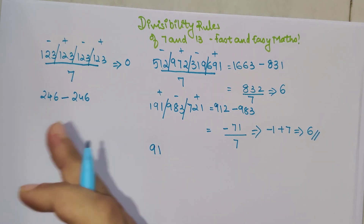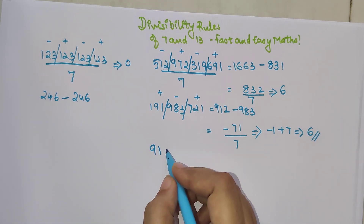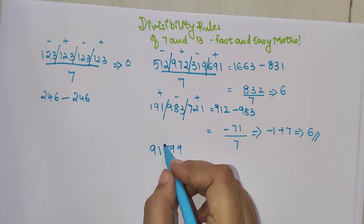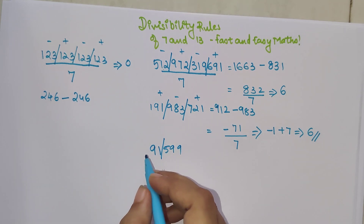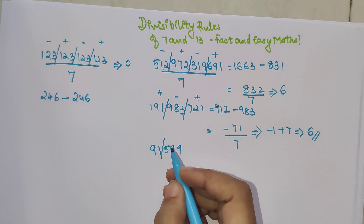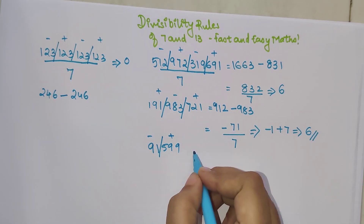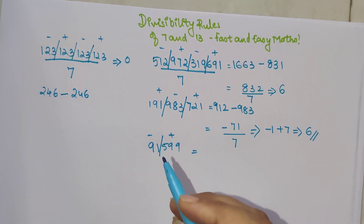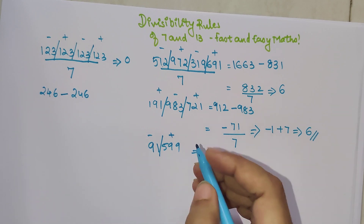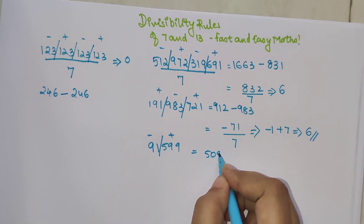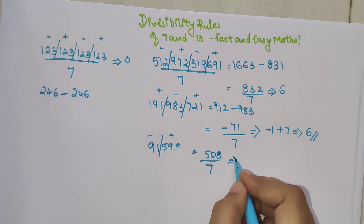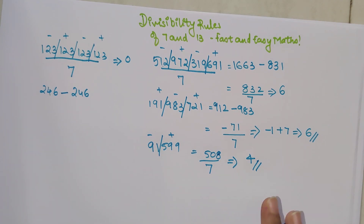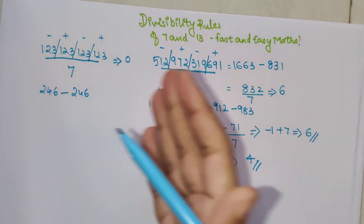Now, what if the number can't be evenly clubbed in groups of three? Take 91599. Starting from the right: first group is 599, and the leftover is just 91 — that's fine, use the same logic. So 599 minus 91 = 508. Dividing 508 by 7 gives a remainder of 4. That's your answer.